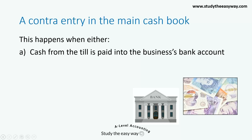A contra-entry happens in one of two situations. Either cash from the till is paid into the business's bank account. This involves debiting the bank account and crediting the cash account, as we saw in the previous example.